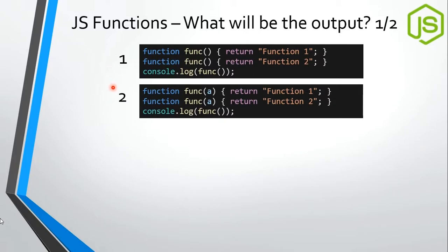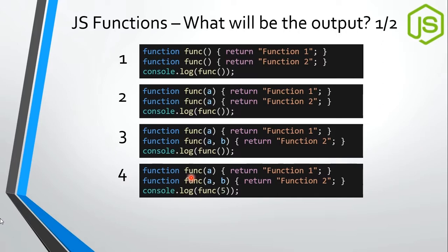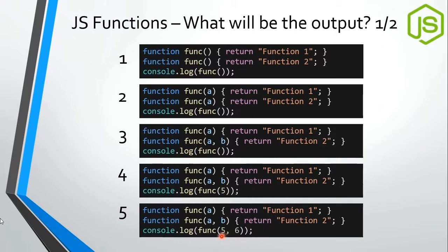In another example, both functions are identical and take a single argument. If we skip the second declaration, we would get an error because a function with no argument does not exist. If we can overload by changing parameter count, calling func with no argument would still cause an error since that version does not exist. When calling func with a single argument, the expected output would be 'function one', and calling with two arguments would return 'function two'.